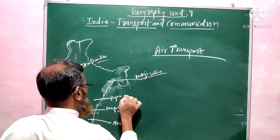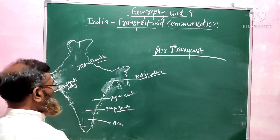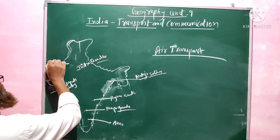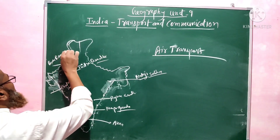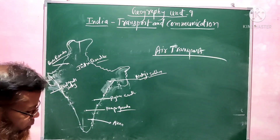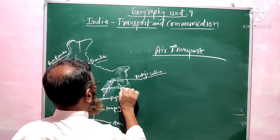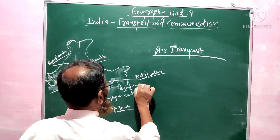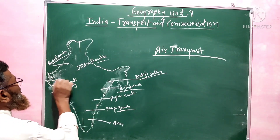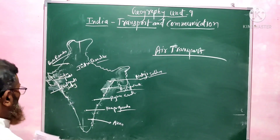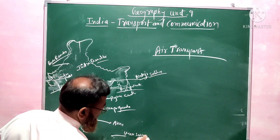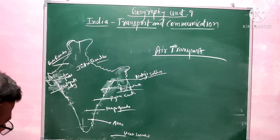There is Rajiv Gandhi Airport in Hyderabad. Next is Sri Guru Ramdas Ji Airport in Amritsar. Then Guwahati Gopinath Airport. And Biju Patnaik Airport — named after the former Chief Minister of Odisha. Then Sardar Vallabhbhai Patel Airport in Ahmedabad. Then Veer Savarkar Airport in Port Blair, Andaman and Nicobar.